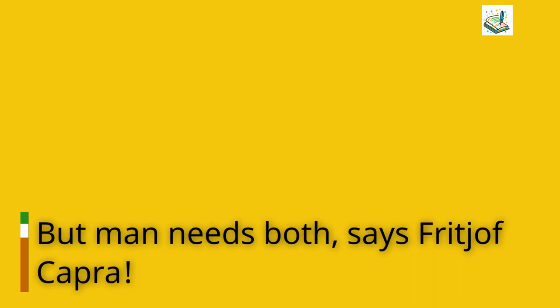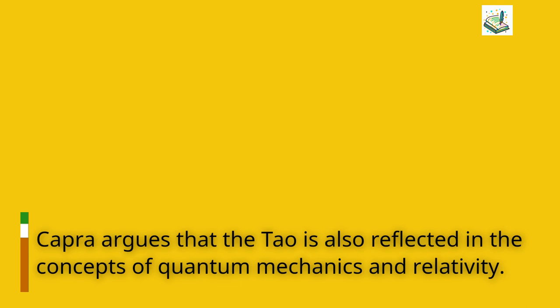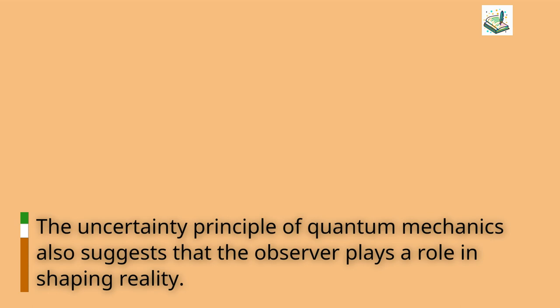Capra argues that the Tao is also reflected in the concepts of quantum mechanics and relativity. The uncertainty principle of quantum mechanics suggests that the observer plays a role in shaping reality.